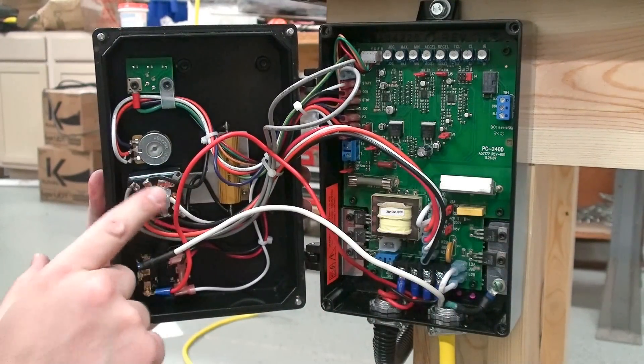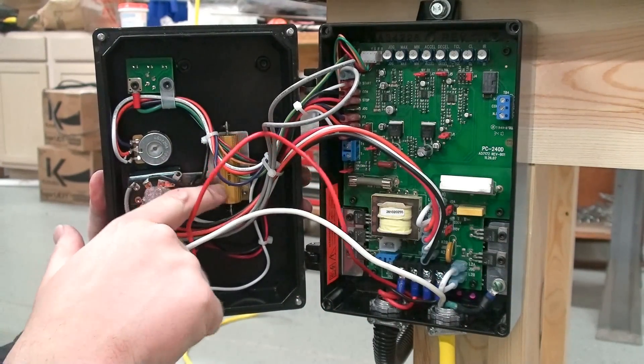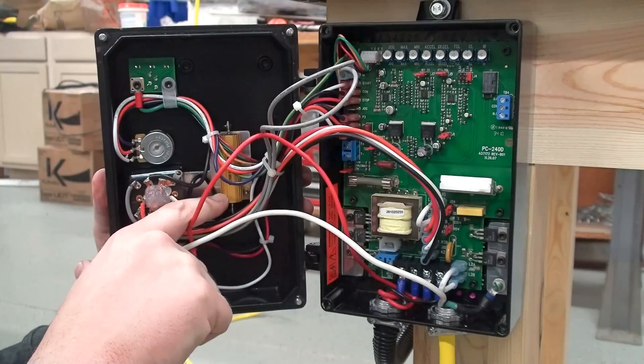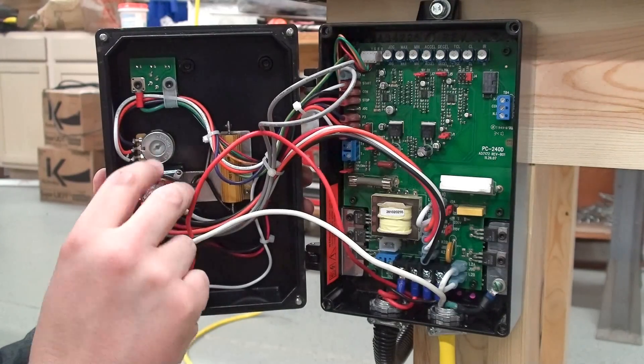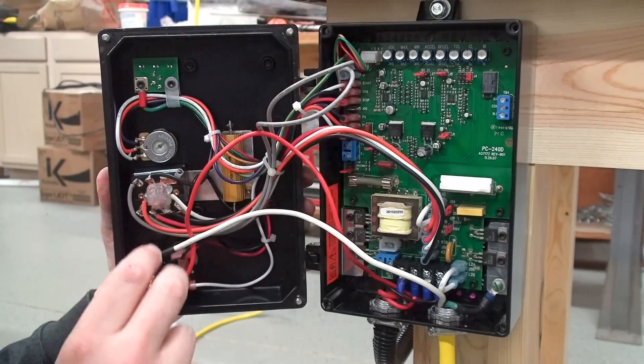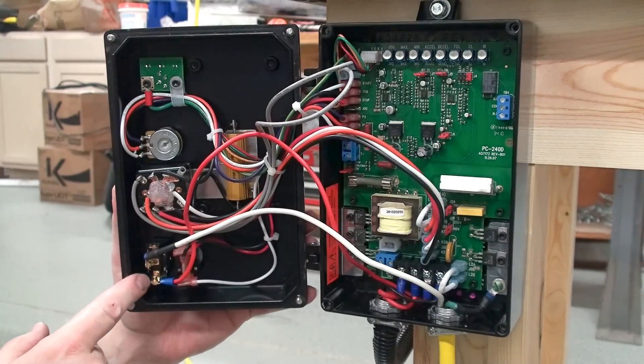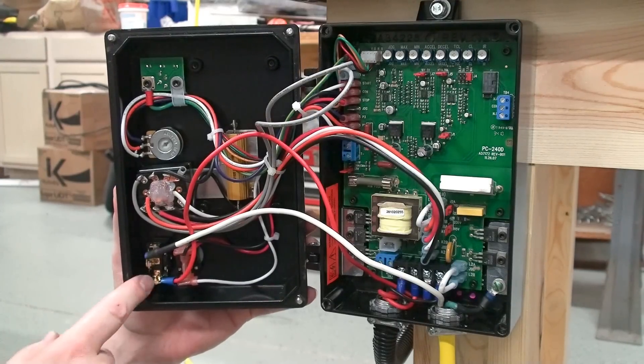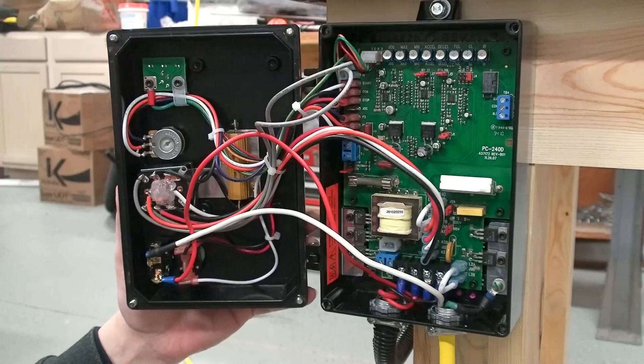This one right here is the forward reverse switch. It's a rather large component here. It's got this large capacitor here and then this large portion of the switch. Here's where I added in the power switch, the separate power switch, just a switch that I bought at the hardware store.